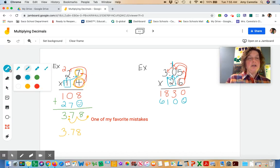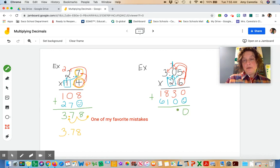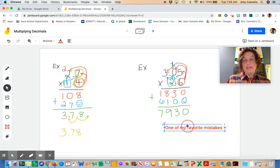I take those products and add them together to find the sum. So 0, 3, 9, 7. Now another one of my favorite mistakes is sometimes people get confused.